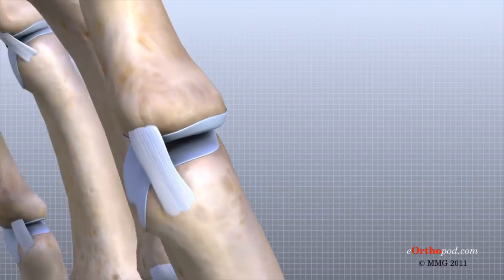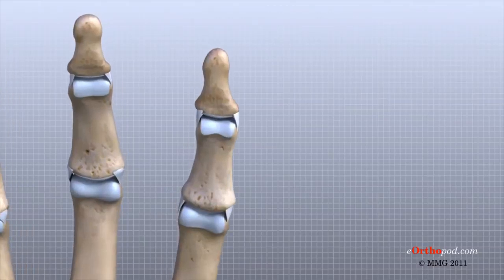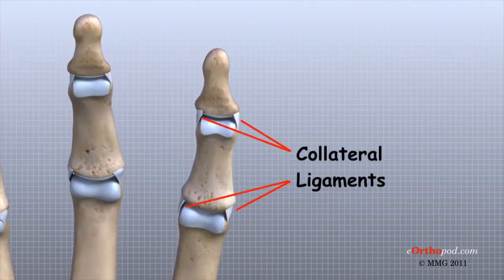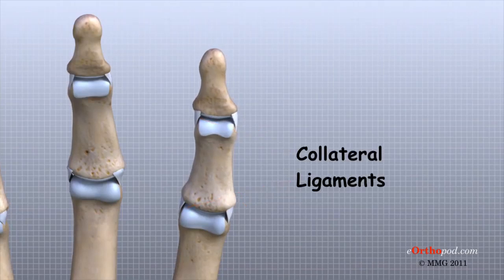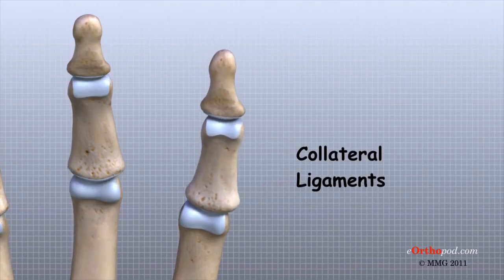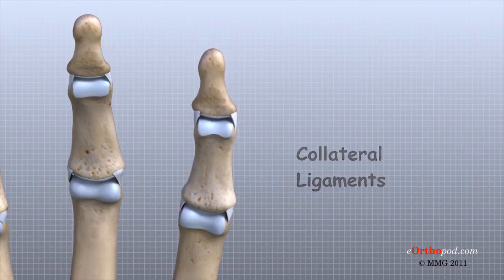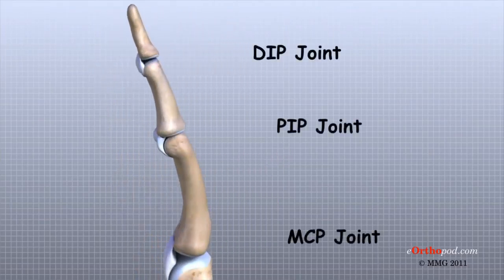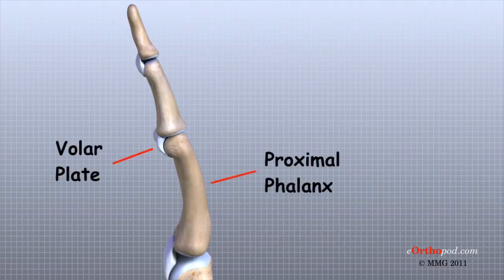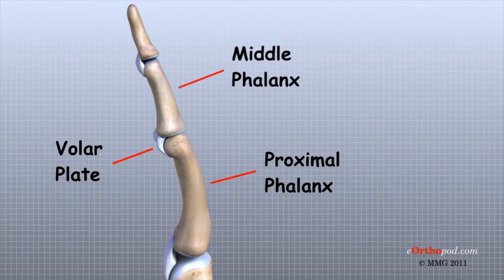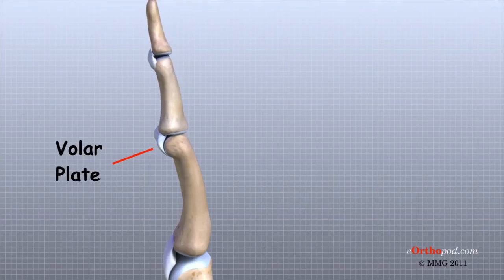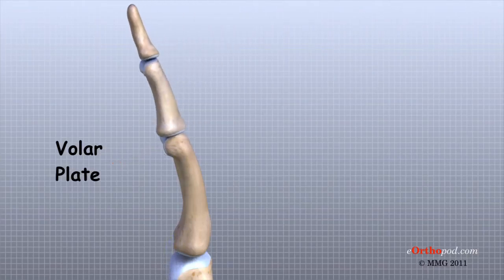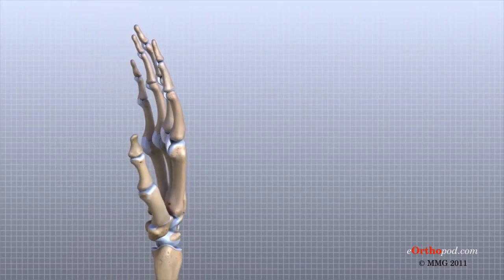Ligaments are tough bands of tissue that connect bones together. Two important structures called collateral ligaments are found on either side of each finger and thumb joint. The function of the collateral ligaments is to prevent abnormal sideways bending of each joint. In the PIP joint, the middle joint between the main knuckle and the DIP joint, the strongest ligament is the volar plate. This ligament connects the proximal phalanx to the middle phalanx on the palmar side of the joint. The ligament tightens as the joint is straightened and keeps the PIP joint from bending back too far or hyperextending. Finger deformities can occur when the volar plate loosens from disease or injury.